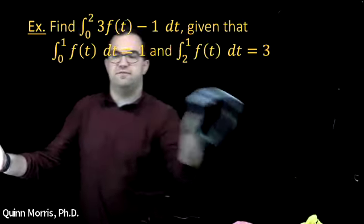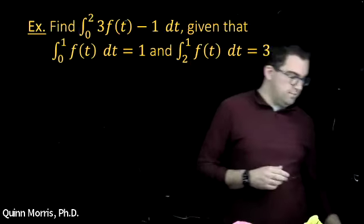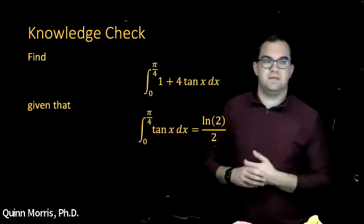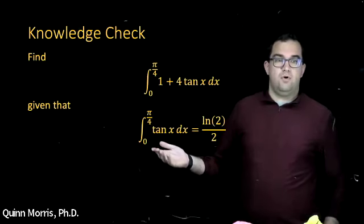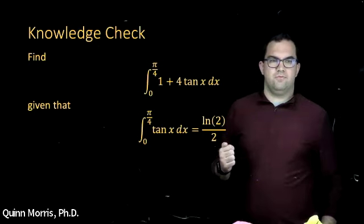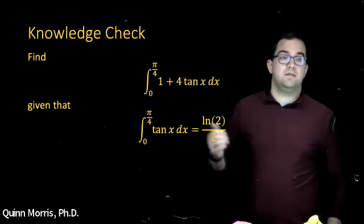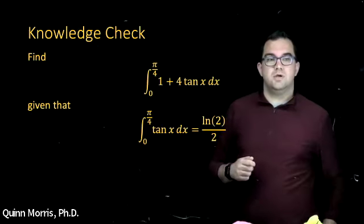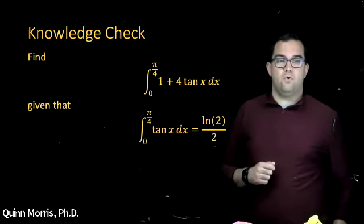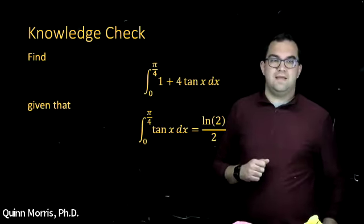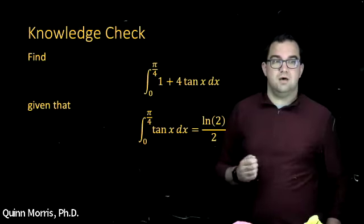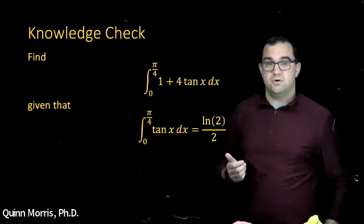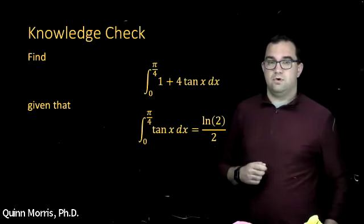In that case we didn't know the specific function f of t — I just told you information about the integral. We can do similar things with specific functions. We don't yet know how to calculate the integral from 0 to π/4 of tan(x) dx, but I'll tell you it equals ln(2)/2. Given that, use the properties of definite integrals to evaluate the integral from 0 to π/4 of 1 plus 4 tan(x) dx.